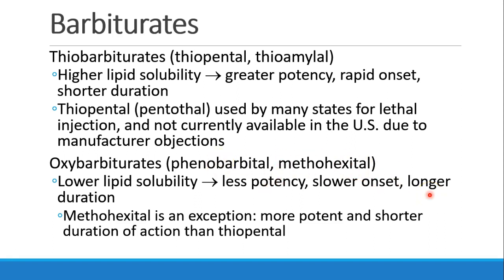Oxybarbiturates include phenobarbital and methohexital. These drugs tend to have lower lipid solubility, be less potent, have a slower onset, and a longer duration. But methohexital is an exception to this rule — it tends to be more potent and have a shorter duration of action, even shorter than thiopental.